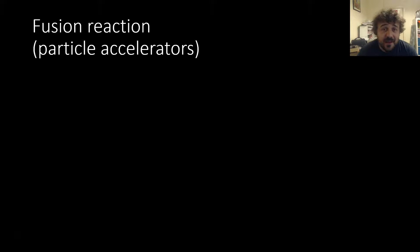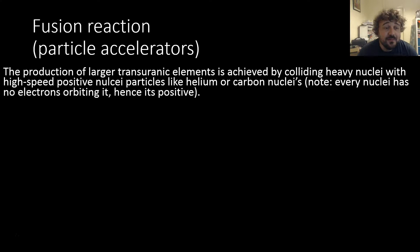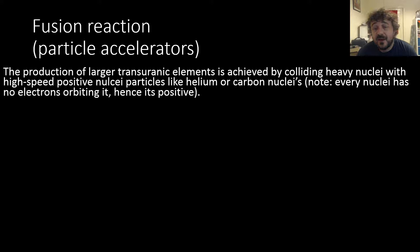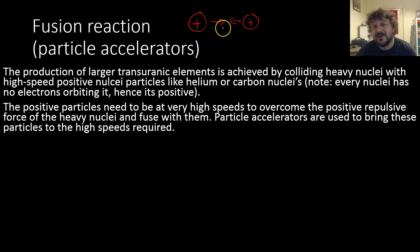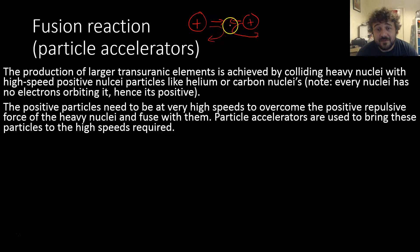Let's have a look at fusion reactions — these happen in particle accelerators. This is how we make the larger transuranic elements, by colliding heavy nuclei at high speed. We can do this by colliding a uranium target with helium, carbon, or other nuclei. The nuclei are both positively charged, so they repel each other. By accelerating them to very high speeds, we give them enough momentum that the repulsive force can't stop them — and that's why we use particle accelerators.